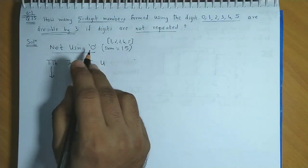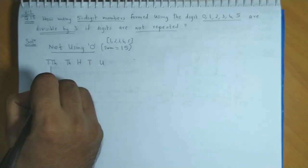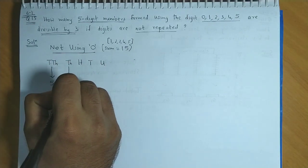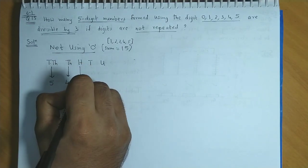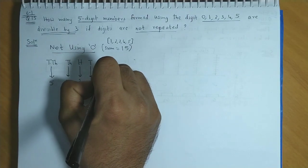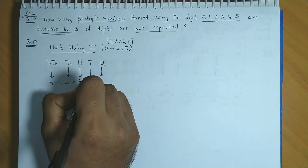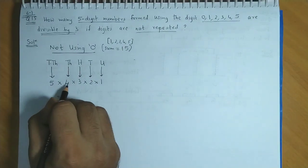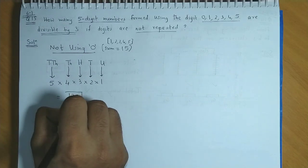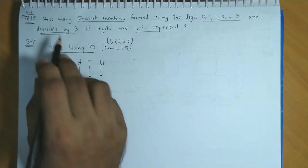Ten thousands place could be arranged in 5 ways. Since digits cannot be repeated, thousands place will be 4 ways. Hundreds place would be 3 ways, tens place would be 2 ways, and units place would be 1 way. So the 5 digit numbers formed will be 5 times 4 equals 20, times 6, that is 120. So here 120 five-digit numbers can be formed which would be divisible by 3.